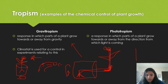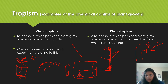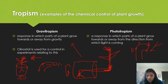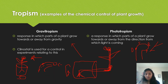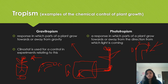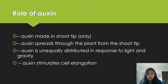Now if you have an image with light coming from one side and regions labeled A, B, and C, the highest concentration of auxin will be at B because that is furthest away from the light source. Auxin is always going to be furthest away from the direction of light, and that's why plants always face toward the light.